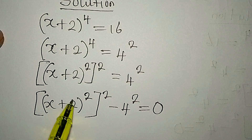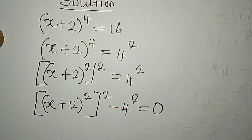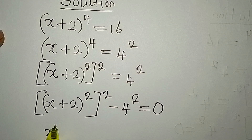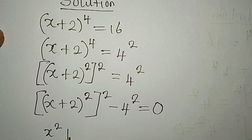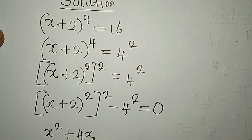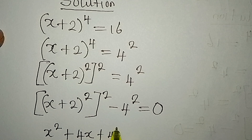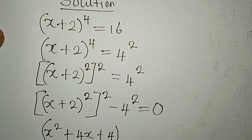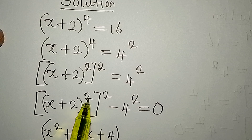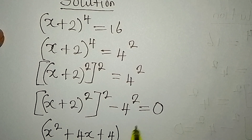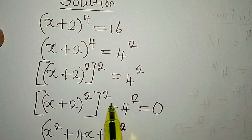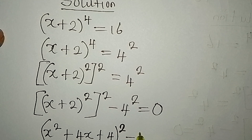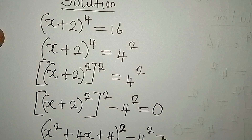We can expand (x plus 2) squared to get x squared plus 4x plus 4. We place this in brackets — the inner square is gone since we expanded it — and the outer square still appears. Then we have minus 4 to the power of 2, equal to zero.